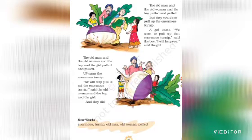Now I have read the full lesson. First tell me one thing — what are the characters in this story? Yes: the turnip, the old man, the old woman, the boy, and the girl. So totally five characters are played in this story.